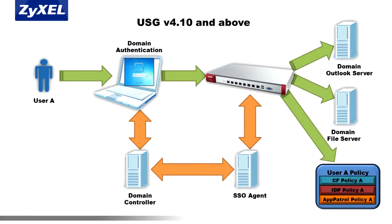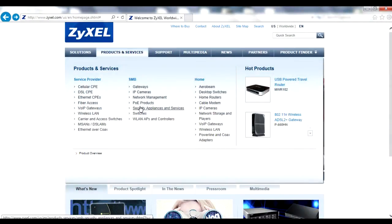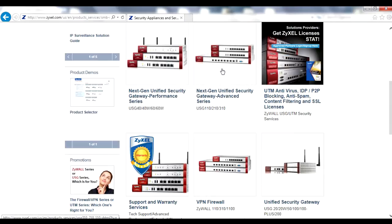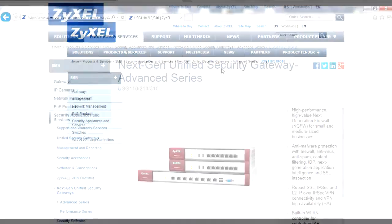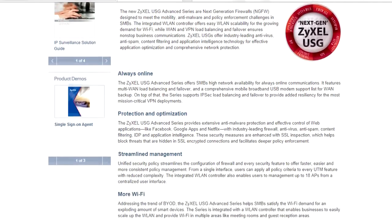You'll also need to install the single sign-on agent, or SSO agent, onto a host machine. The agent is a go-between for the USG and domain controller whenever a new user signs in. You can download the software at www.zyxel.com/SSO, or by navigating to any NextGen USG product page at www.zyxel.com and clicking on the SSO agent link in the related products section.